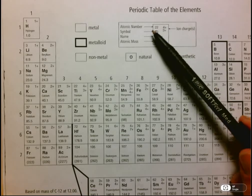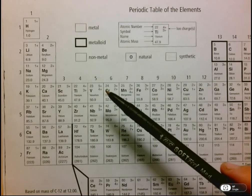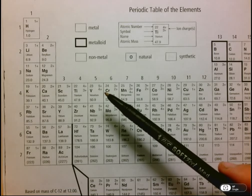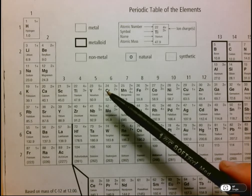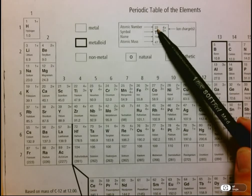You've got the symbol that represents the element and its name. Then up above you've got the atomic number, and this tells you the number of protons and electrons in an atom. So here this says that there's 22 protons in the nucleus and then 22 electrons in the electron shells.